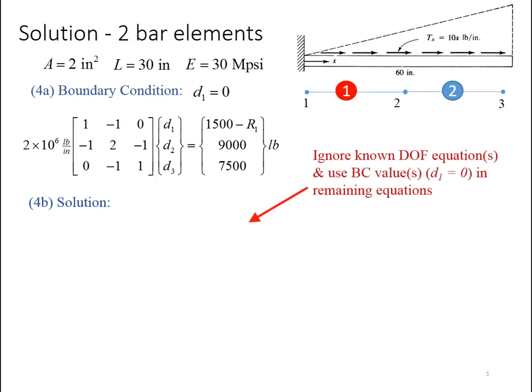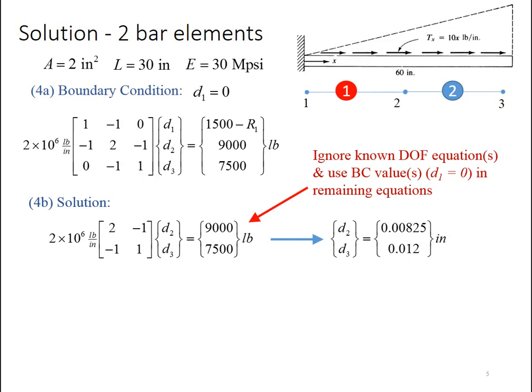So the solution process basically consists of ignoring the known degree of freedom equation, in this case equation 1, and use the boundary condition value d1 equals 0 in the remaining equations. So that's going to allow us to simplify this expression. We're only going to focus on the last two equations here, and this negative 1 is multiplied by 0 so it goes away. So we end up with this expression, which we can easily solve, and we get that the displacement at node 2 is 0.00825 inches, and displacement at node 3 is 0.012 inches. We're getting more displacement as we move further out, that's what we would expect.